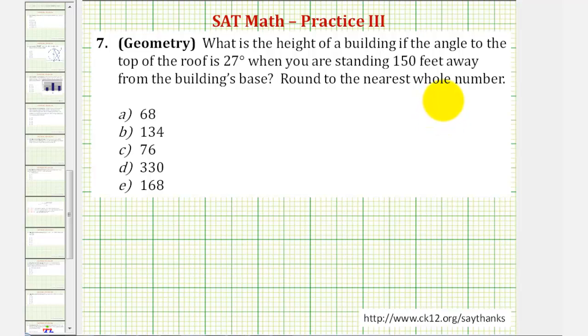So we're starting with a building, and you're standing 150 feet away. So let's say you're standing here, then the length of the segment from this point to the building would be 150 feet, and the angle to the top of the roof, also called the angle of elevation, would be formed from this point to the top of the building, where this angle here measures 27 degrees.